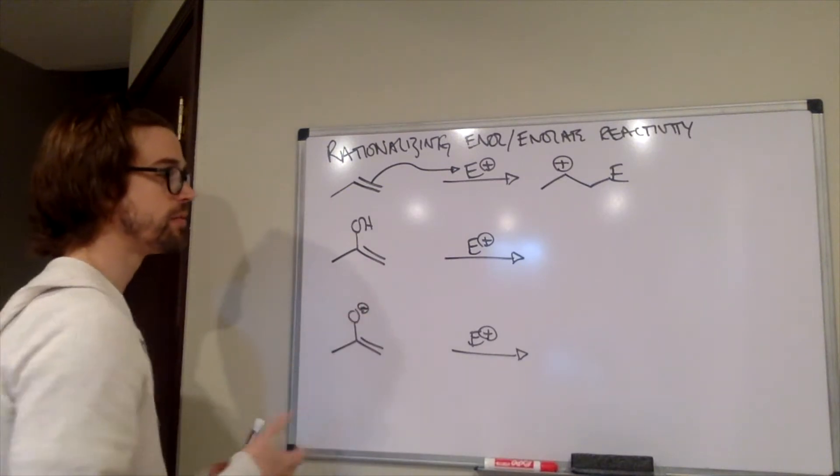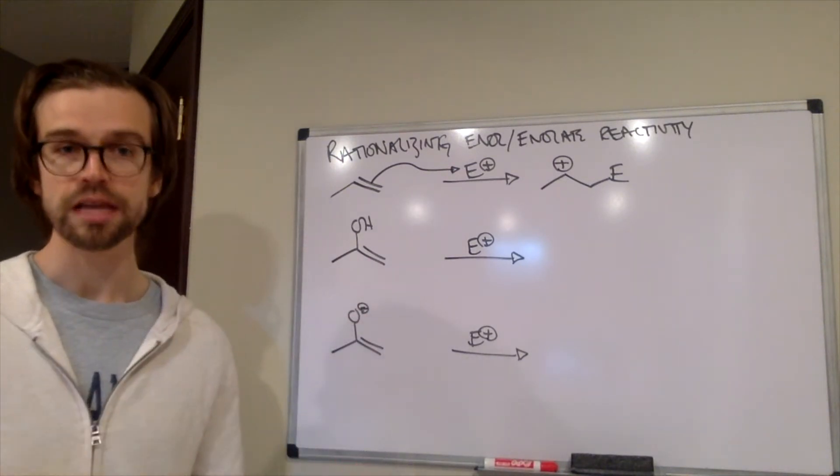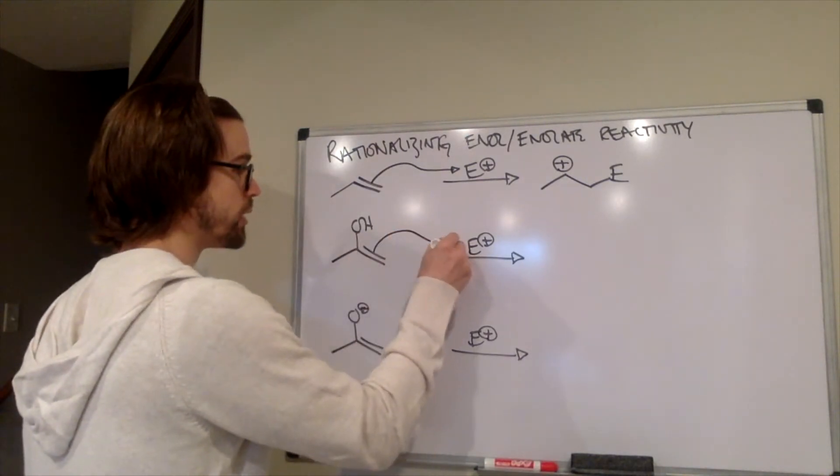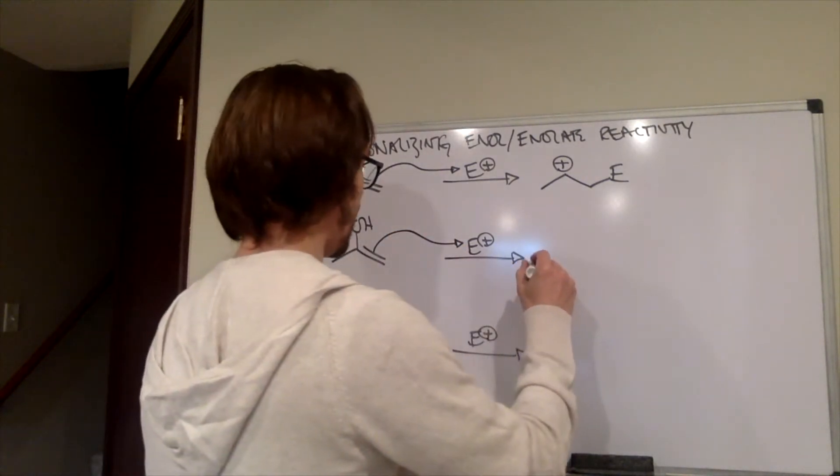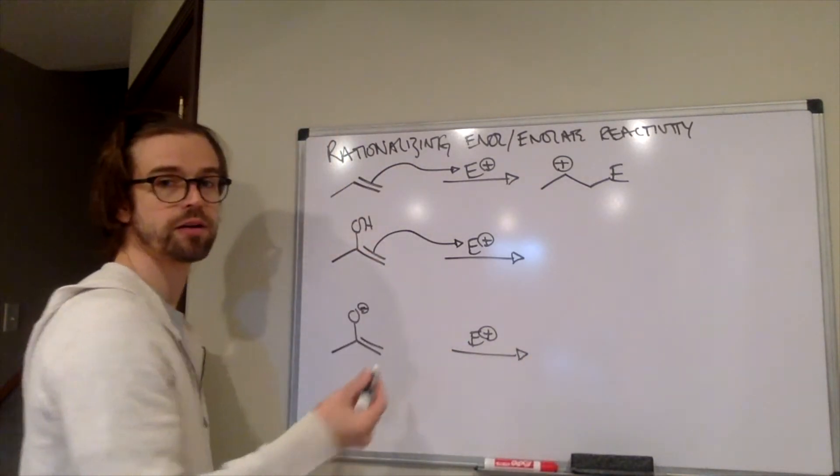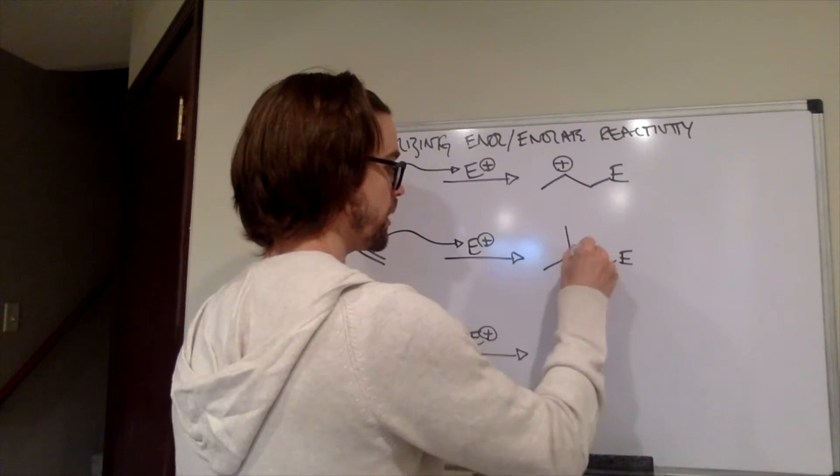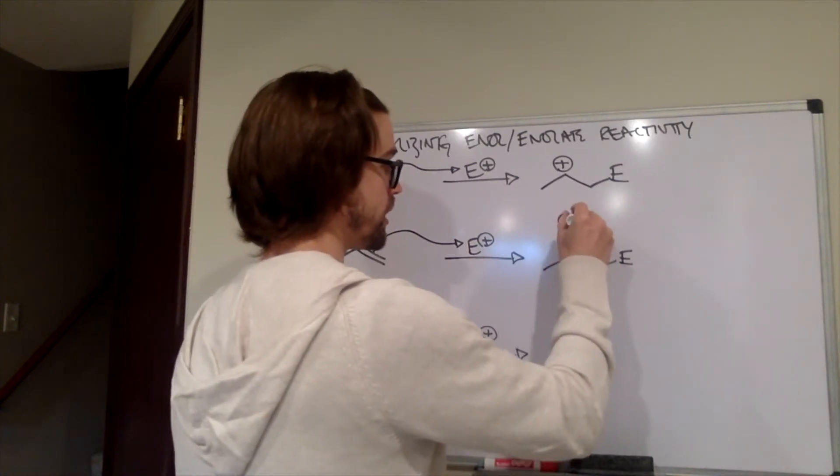How's that going to be different than our enol? Turns out it's not really going to be much different at all. If we have an enol, it's going to react the same way. We're going to add the electrophile to that pi bond. That will add the electrophile to the terminal position, putting a positive charge there.